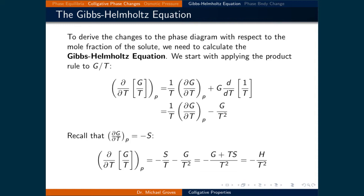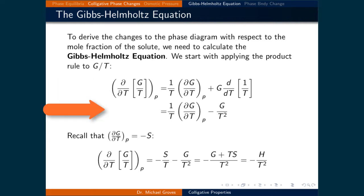To derive the changes to the phase diagram with respect to the mole fraction of the solute, we need to calculate something called the Gibbs-Helmholtz equation. We start with applying the product rule to the Gibbs free energy divided by the temperature. The derivative with respect to temperature at constant pressure of G/T is equal to 1/T times the partial derivative of G with respect to temperature at constant pressure, plus G times the derivative of 1/T, which gives negative 1 over T squared.